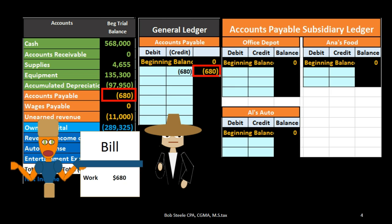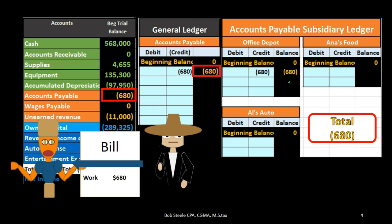We also want to track that information by vendor — who is it that we owe the $680 to? In this case, Office Depot. We increase Office Depot's subsidiary ledger account for accounts payable. Now if we add up all the subsidiary ledger accounts, we only owe Office Depot, so it adds up to $680. The subsidiary ledger ties out to the general ledger, which ties out to the trial balance and the balance sheet as well.